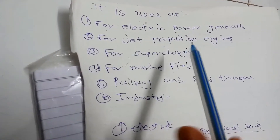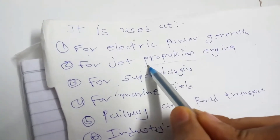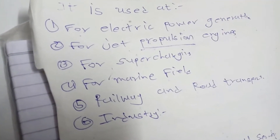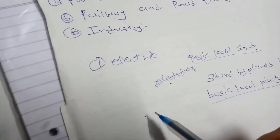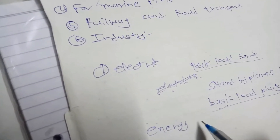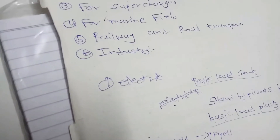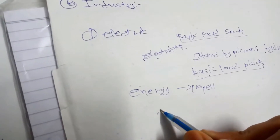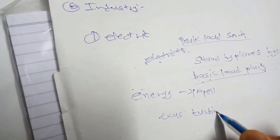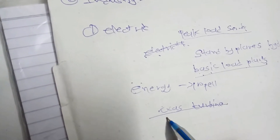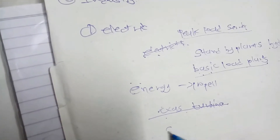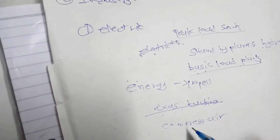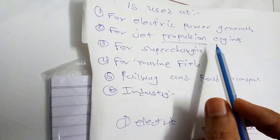The second major application is jet propulsion. Propulsion means using energy to propel something — to make something move forward. Every jet engine has a gas turbine, and it uses this gas turbine to compress air. Gas turbines are particularly used in jet propulsion engines for air compression.